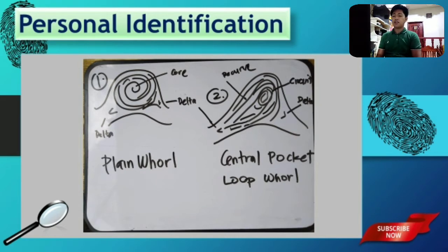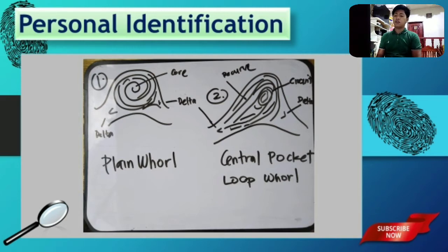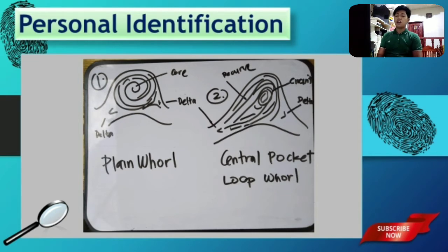For figure number one, we labeled the core and the delta — there are two deltas there, so definitely this will be considered as a plain whorl. Now, what about the central pocket loop whorl? The definition is that this is a type of whorl where we have a whorl pattern, plus we have recurving ridges — which is the characteristic of a loop pattern. It will be considered a central pocket loop whorl when the spiral circuit is located at the middle of the recurving ridge. From the word 'packet' itself — the whorl pattern is enclosed or 'pocketed' within the recurving ridge.